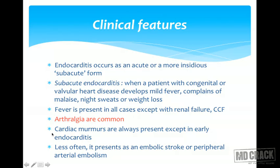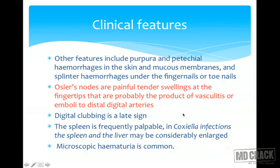Arthralgias are very common and an MCQ can be formed on this. Cardiac murmurs are always present except in early endocarditis. Less often it can present as an embolic stroke or peripheral arterial embolism. Other features include purpura and petechial hemorrhages in the skin and mucous membranes, and splinter hemorrhages under the fingernails or toenails. Osler nodes are painful, tender swellings at the fingertips, probably a product of vasculitis or emboli to distal digital arteries.